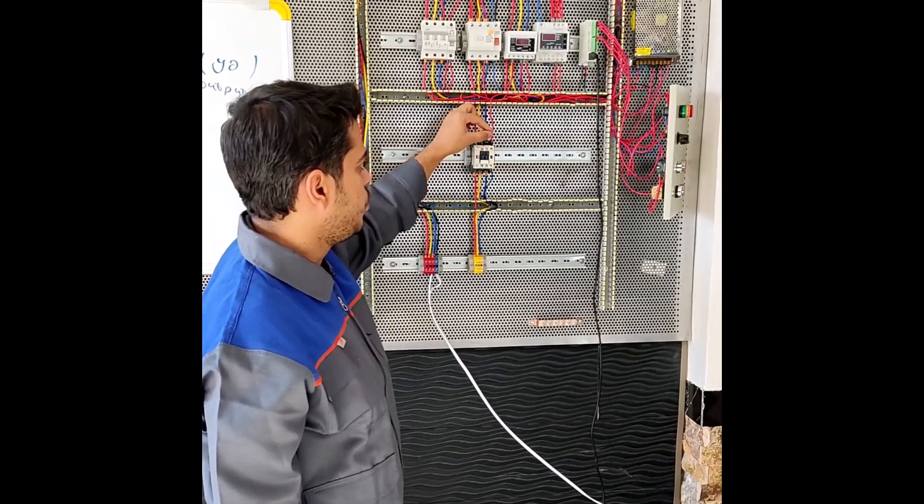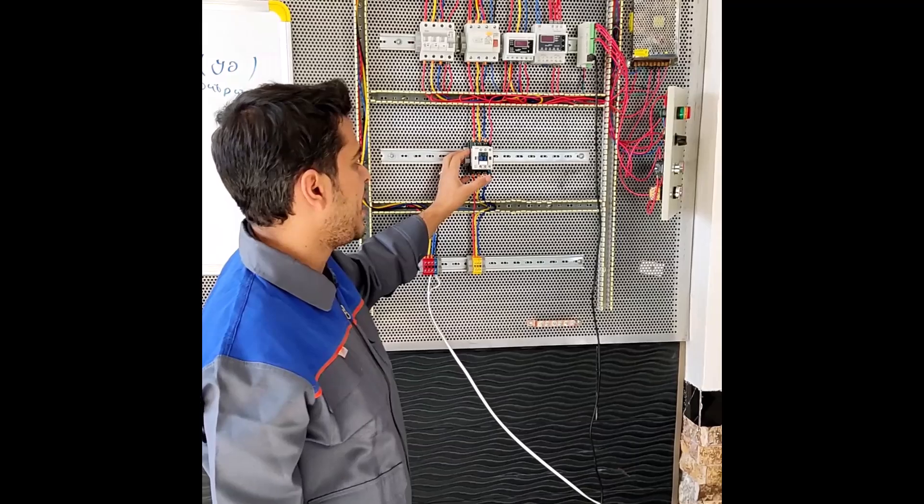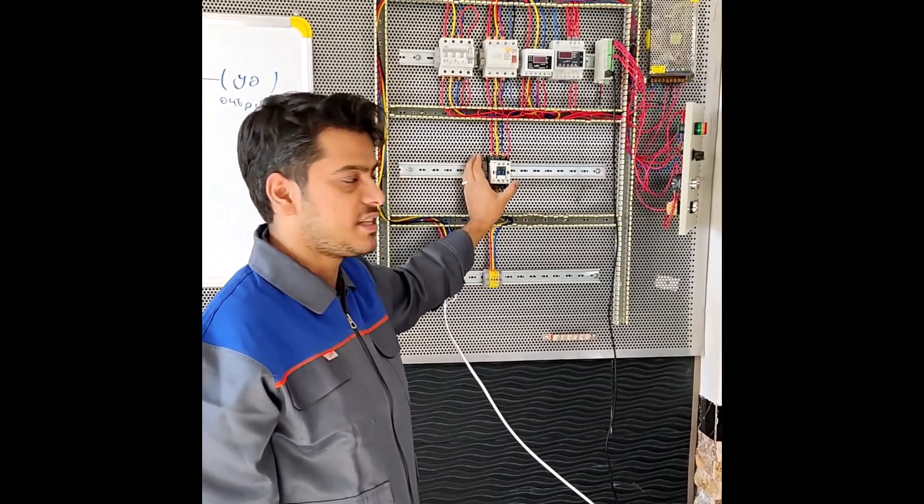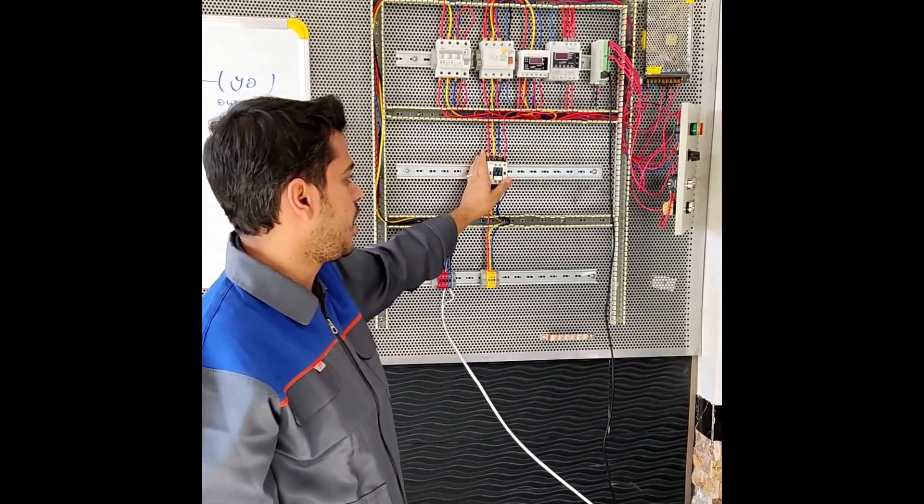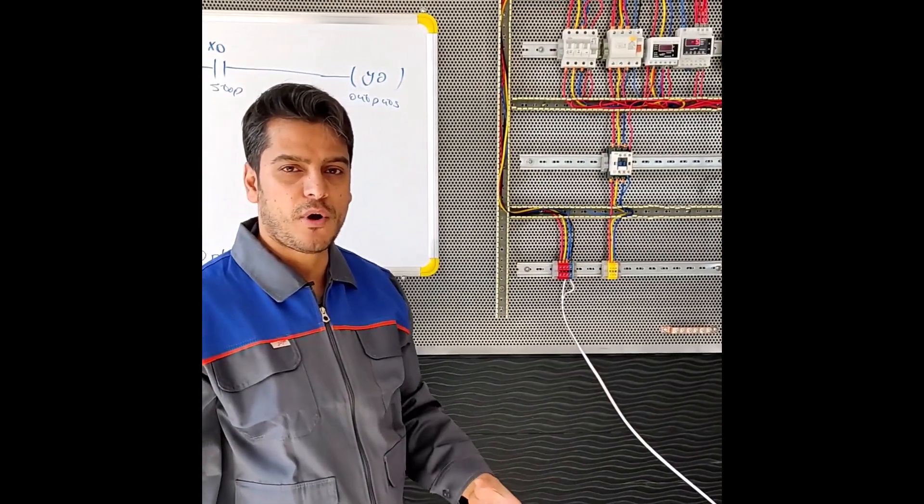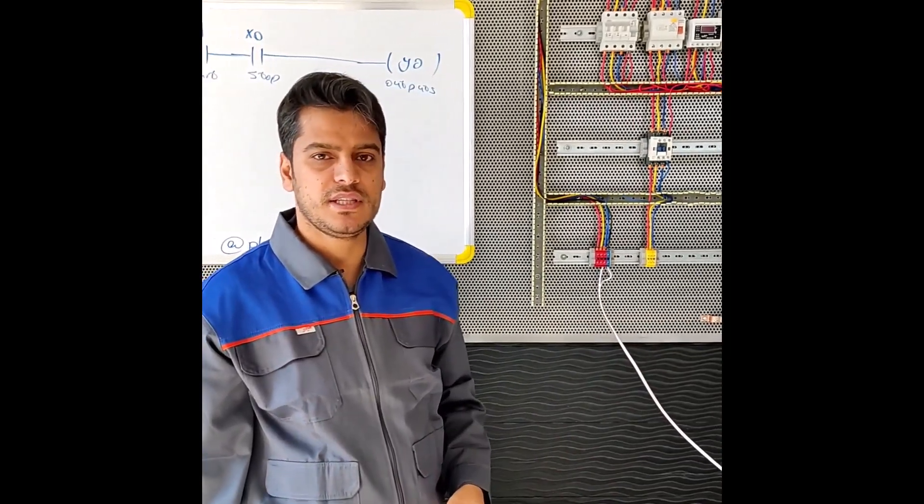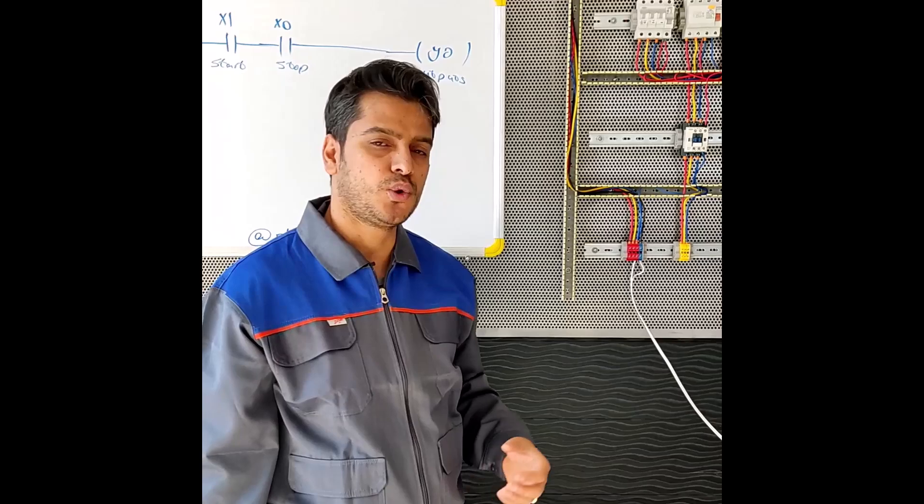This is the PLC wiring for starting a three-phase motor, which you can launch momentarily or permanently. The program that you write inside the PLC determines whether this program will work momentarily or permanently.